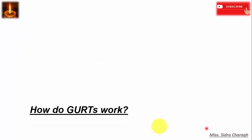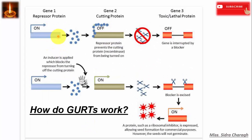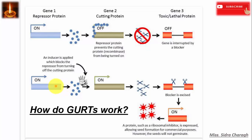Here you can see how genetic use restriction technology works. A repressor gene encodes a particular protein, and the recombinase gene's expression is blocked by this protein — this gene is interrupted by a blocker, so no toxic or lethal protein is formed. The external inducer is provided by the seed company before selling to the customer. This treatment stops production of the repressor protein; the recombinase is produced, which prevents the action of the spacer DNA, thus allowing expression of the terminator gene and killing the embryo of the seed, so the seed will not germinate in the next generation.